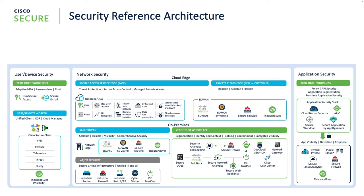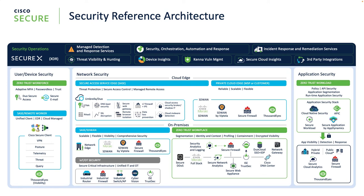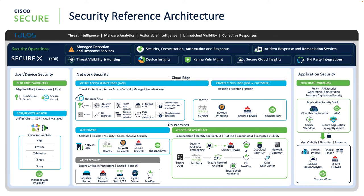To top it all off, SecureX brings everything together. Cisco SecureX is our XDR solution, which brings user and device security, network security, and application security to one place — where you're able to manage better, orchestrate, automate, and respond in your environment. It also provides things like third-party integration, threat visibility, and threat hunting. Everything you've protected is now brought together through SecureX.